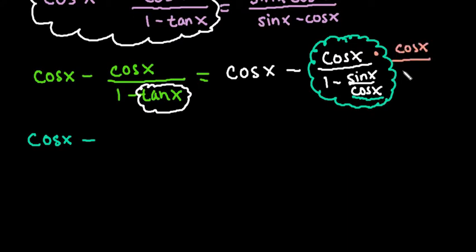If I multiply both the numerator and denominator by cosine x over cosine x, I'm essentially multiplying by 1.